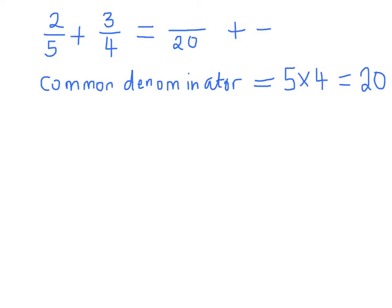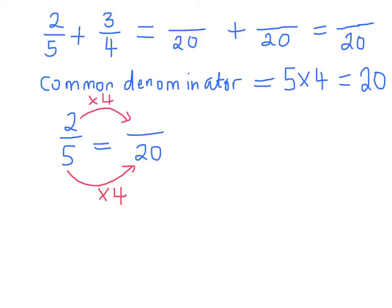So I'm going to rewrite 2 over 5 as something over 20. And I'm going to add it to 3 over 4, which I'll rewrite as something over 20. And the answer will become something divided by 20 as well. So let's look at 2 over 5. To go from 5 to 20, I multiplied it by 4. So the 2 has to be multiplied by 4 also. So 4 2s are 8. So this value here is 8 over 20.